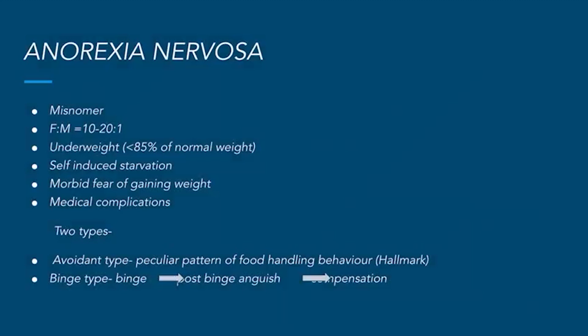The first disorder is anorexia nervosa. Anorexia is a Greek term for loss of appetite, and nervosa simply implies nervous origin. It is a misnomer — the appetite is absolutely normal in these patients. It is much more common in females, 10 to 20 times more common than in males. These patients are drastically underweight.